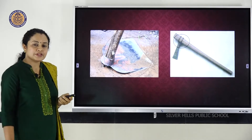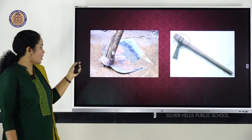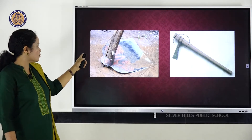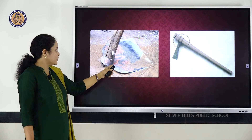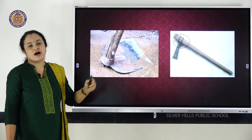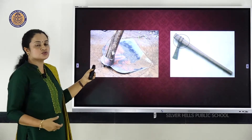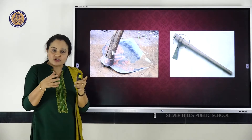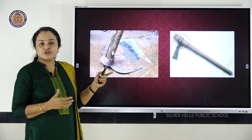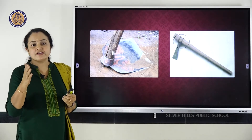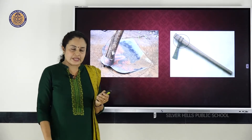The same procedure is followed for fixing metal parts of tools onto wooden handles. They heat the metal part, the rim enlarges, they fit it onto the wooden handle, and when it contracts, it is fixed firmly onto the wooden handle. Here also, we are making use of expansion and contraction in metals.